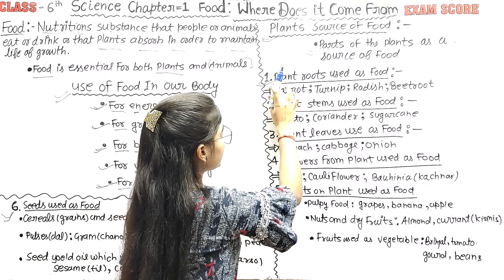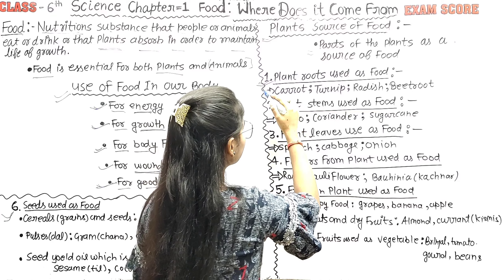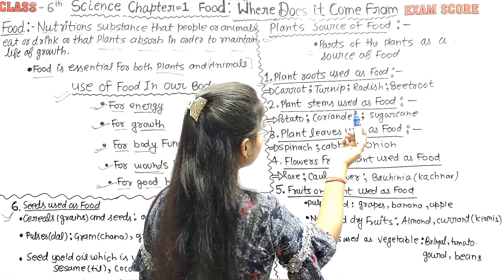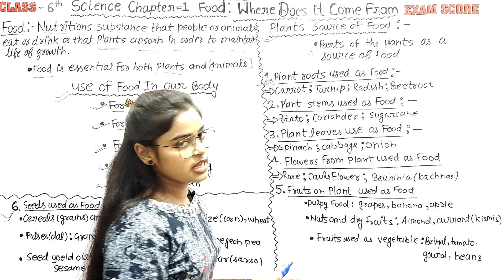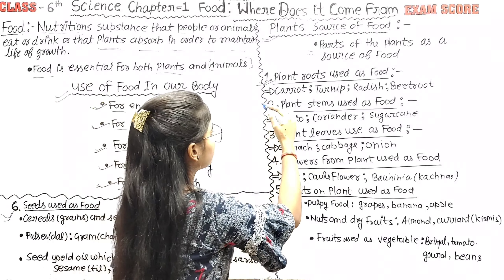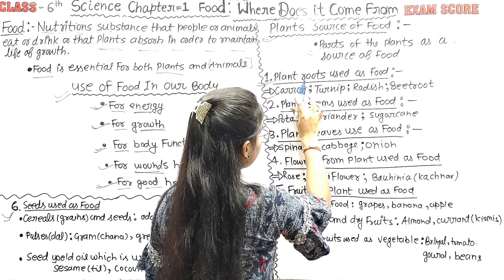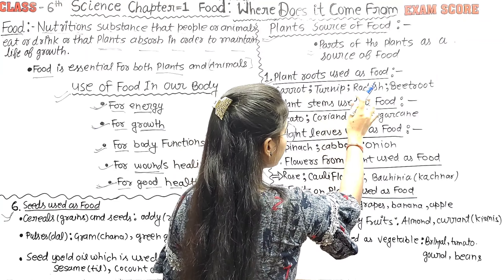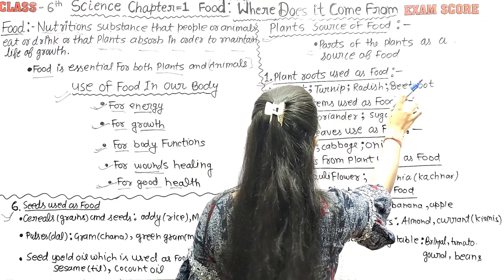The first part of the plant is the root. Roots are the lower parts of the plant. Examples of roots we eat include carrot, turnip, radish, and beetroot.